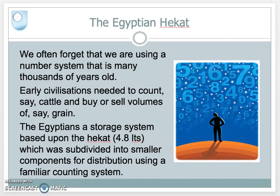The early Egyptians had a storage system called the Hekat, which is roughly about five liters, which is quite large. They needed a mechanism to subdivide this into smaller fractions, smaller components for distribution. Their way of dividing it up used a counting system that's very familiar to us.